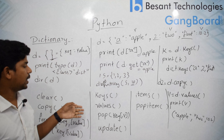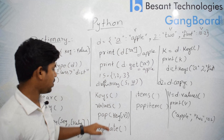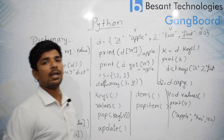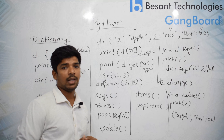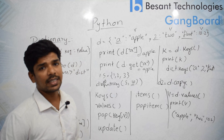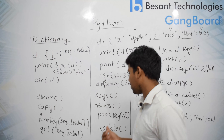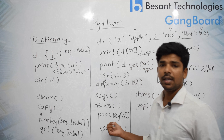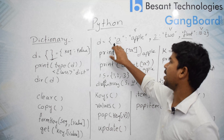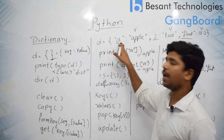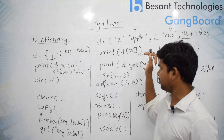Then pop(). Earlier we saw we can remove a particular value using its index. In a dictionary, the key is its index. So we can use pop() with a key to remove a particular element. For example, if I use pop('a'), then both the key 'a' and its value 'apple' will be removed.